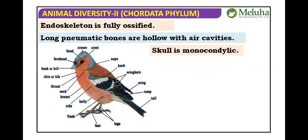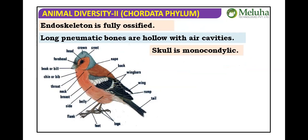The skull is monocondylic, having a single occipital condyle. Recall: fishes are monocondylic, amphibians are dicondylic, reptilians are monocondylic, and now birds are also monocondylic.